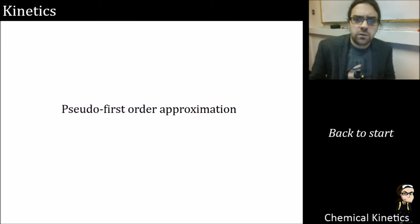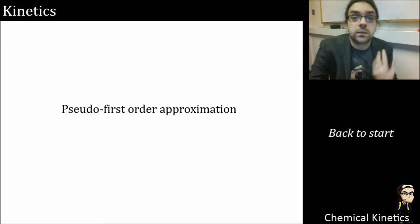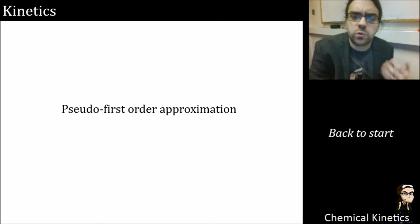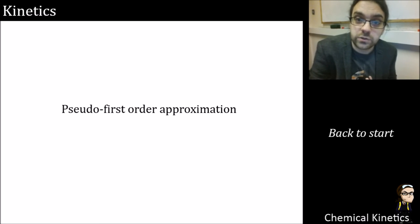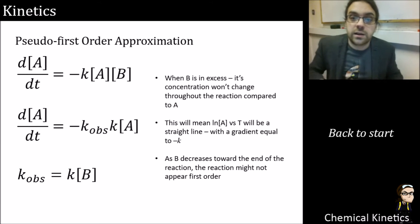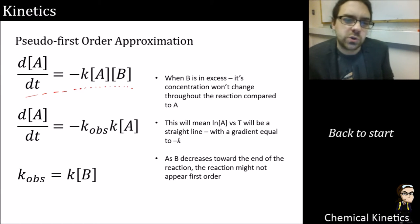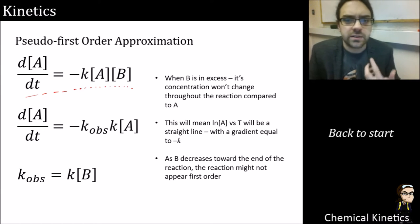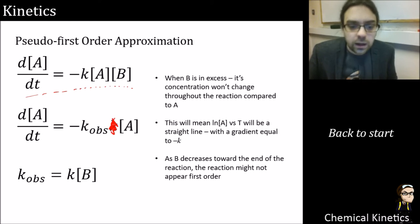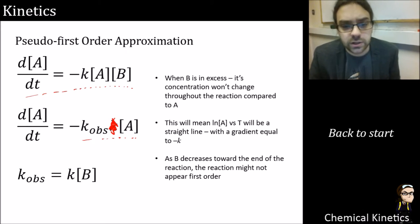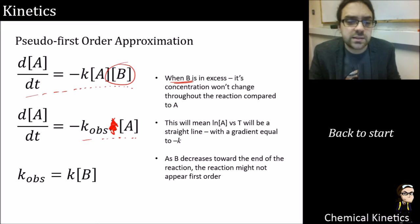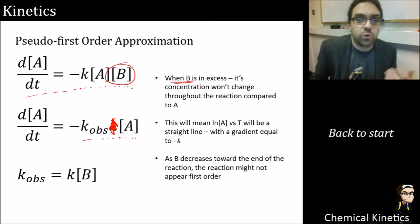First: pseudo first order approximation. A couple of people have issues about how or when to apply it — it's a bit of a weird thing the first time you encounter it. The basics are: in a second order reaction, the rate law is proportional to two concentrations. But we can simplify this down to just a first order reaction. This is only true when one of the reagents is in excess — in this case B is in excess.